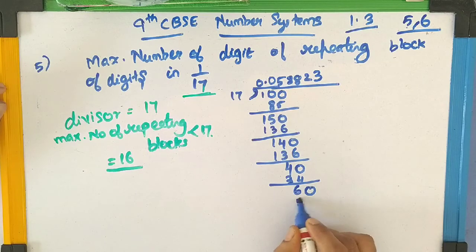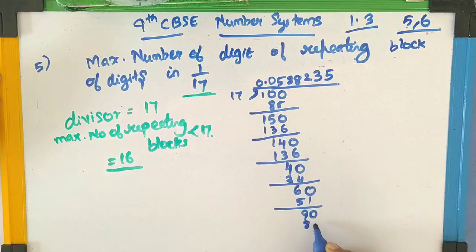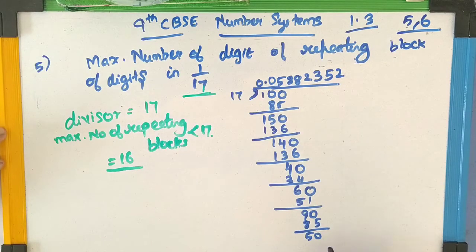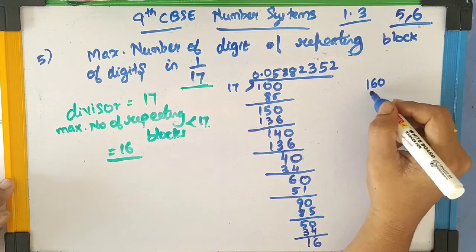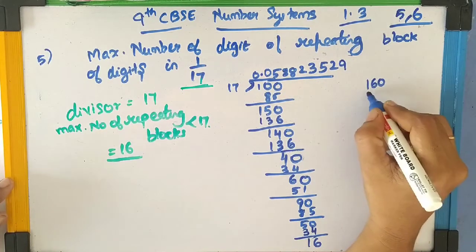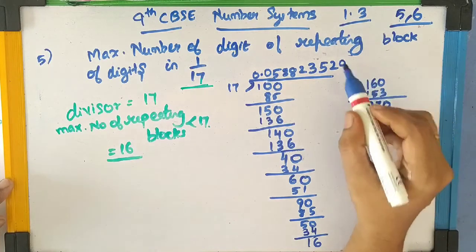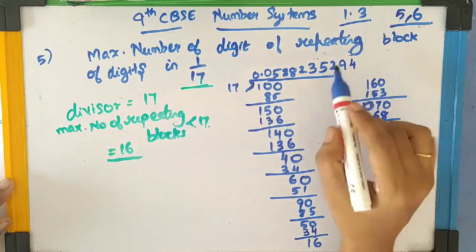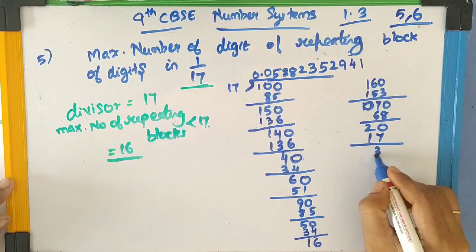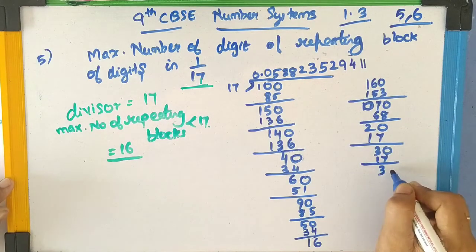Now 3 17s are 51. The remainder is 9. I am adding a 0. I need a remainder of 1, which is the numerator of this question. Now 90 minus 85 is 5, so remainder is 5. Adding a 0, now 2 17s are 34. The remainder is 16. Continuing on the next side: 160 — now 9 17s are 153, remainder is 7. Adding a 0, now 70 — 4 17s are 68, remainder is 2. Adding a 0, 1 17 is 17, remainder is still not 1. Continuing: 1 17 is 17, remainder is 13. Adding a 0 gives 130. Now 7 17s are 119, remainder is 11.